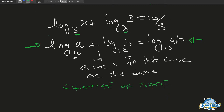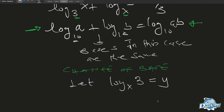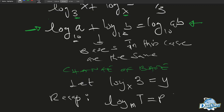So in this case, we see that we have log base 3 of x and log base x of 3. Let's let log base x of 3 be equal to y. So remember, recap: if we have log base m of t equals p, this can be written as t equals m to the power of p.